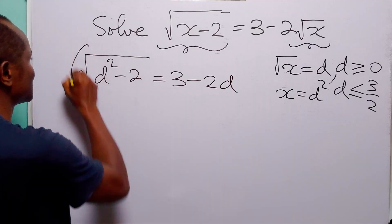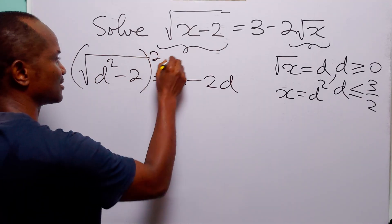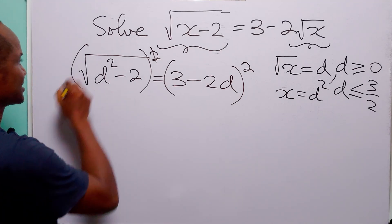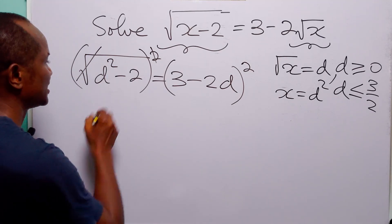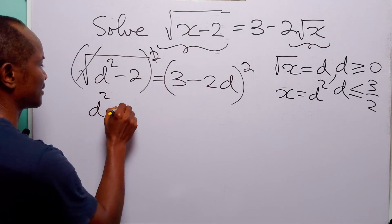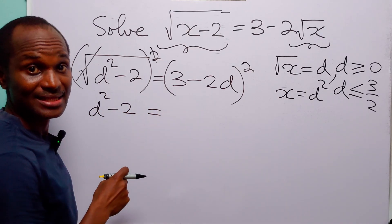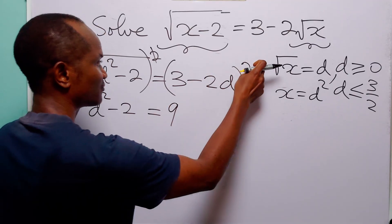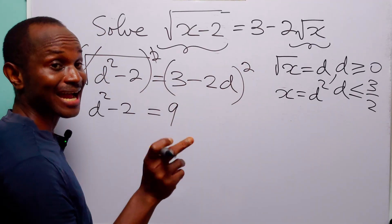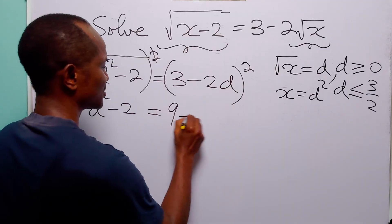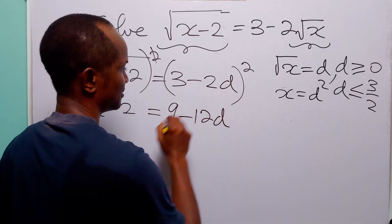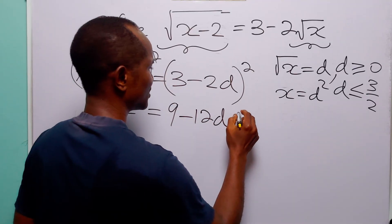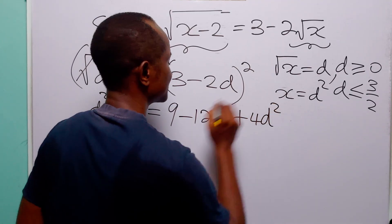What we are going to do is square both sides of this equation. The square on the left-hand side is going to take care of the square root, leaving us with d squared minus 2. And then on the right-hand side, let us expand this. We have 3 squared, which is 9. We have 2 times 3 times minus 2d, which gives us minus 12d. And then we have minus 2d squared, which gives us plus 4d squared.